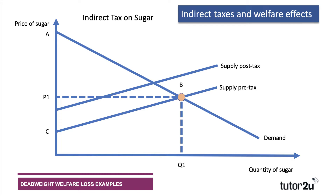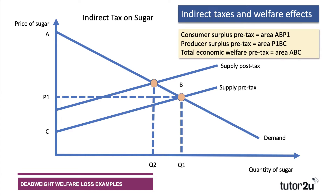Now if we impose a tax on a product, the supply curve will shift upwards. I've introduced a specific tax where the tax per unit is constant, so effectively the firm's costs have gone up. There's our supply post-tax, and as a result the quantity in equilibrium will fall to Q2 and the price will rise to P2.